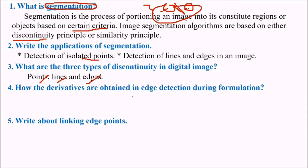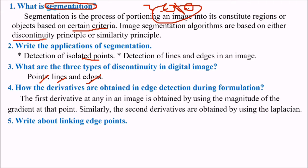How the derivatives are obtained in edge detection during formulation? The first derivative at any point in an image is obtained by using the magnitude of the gradient at that point. Then comes the second derivative. The second derivative is obtained by using the Laplacian. First derivative by the magnitude of the gradient, that is the slope, and second derivative by using the Laplacian.